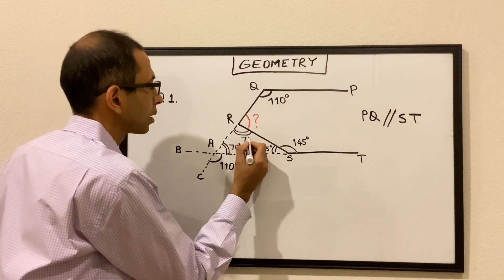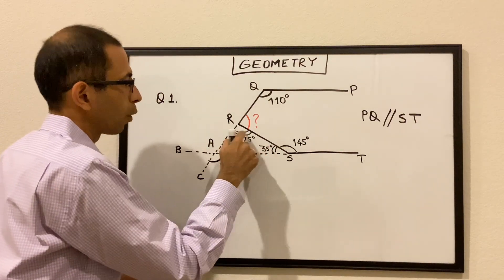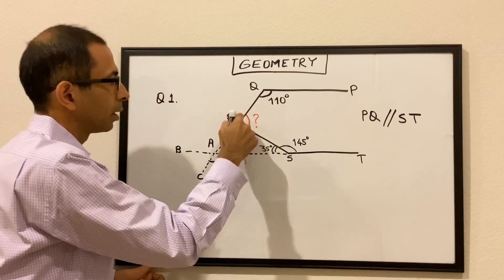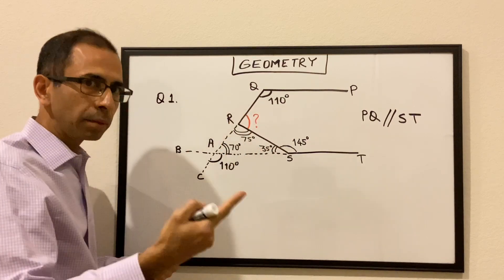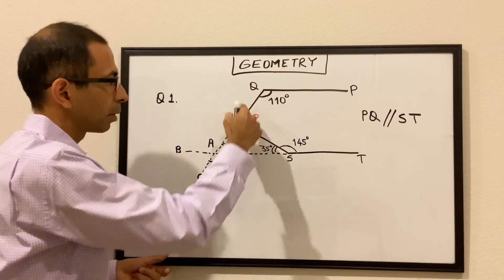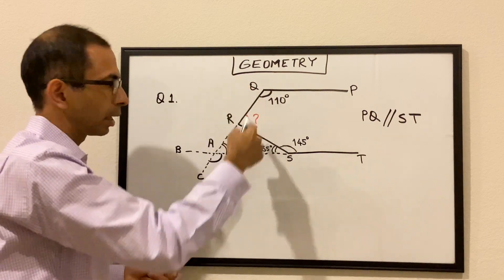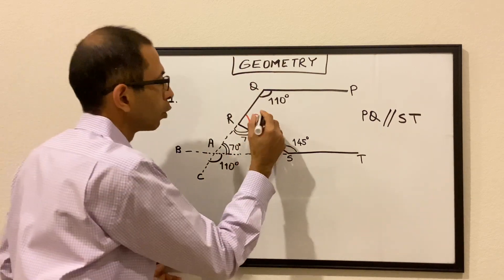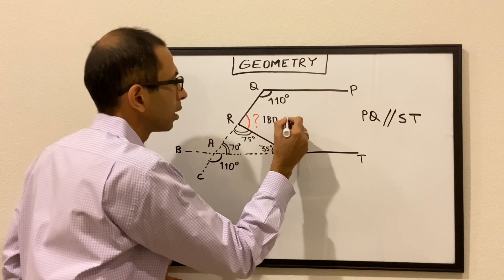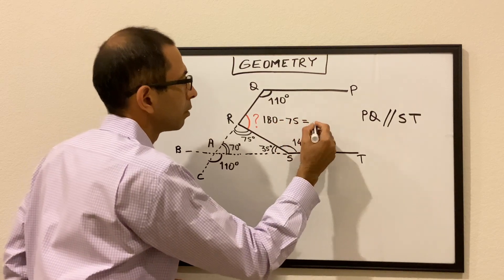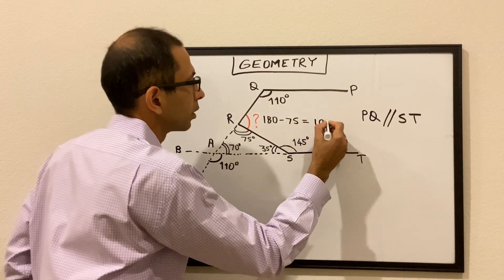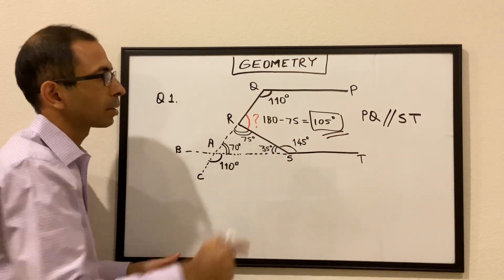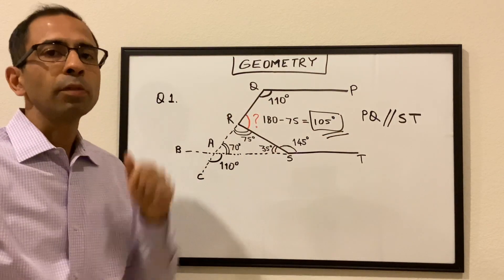So this angle is 75. Now when angle ARS is 75, this angle would be 180 minus 75 because this is a complete straight angle, so angle QRS would be 180 minus 75, which is 105 degrees. So angle QRS is 105 degrees.